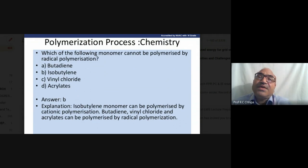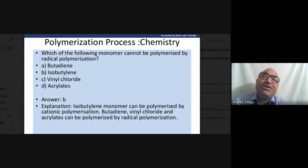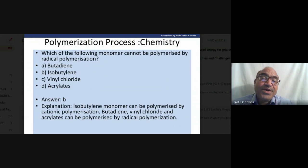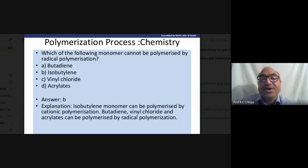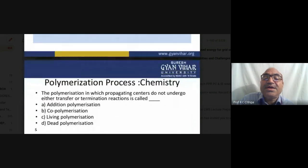Vinyl chloride gives polyvinyl chloride (PVC), which has excellent properties and is used in electrical engineering applications such as electrical cables. Acrylates also have great value and can be polymerized by radical addition reaction. Electrophilic addition reactions also occur with alkenes.